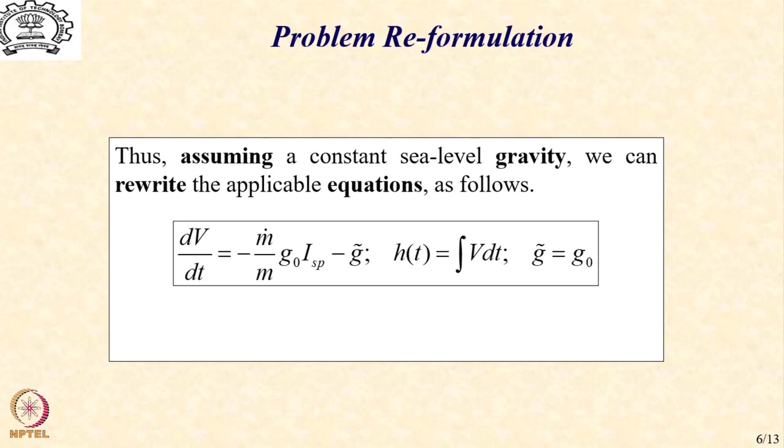In the present case, I am just proposing that let us put g̃ equal to g0, a sea level value. And then of course, the equation for h, which is dh/dt = v, can be rewritten as h = ∫v dt.